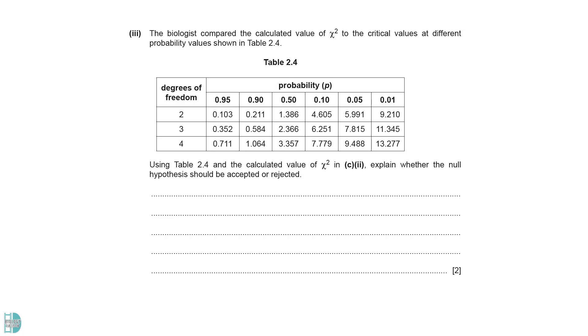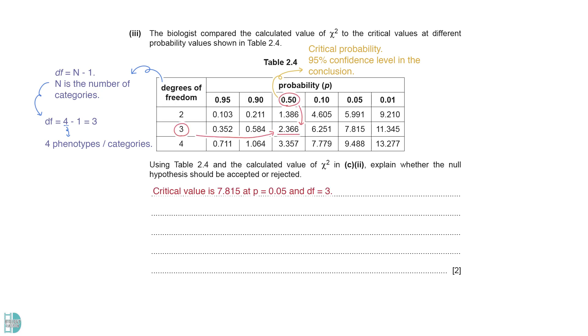Part 3 wants you to make a conclusion based on the value. First, we have to obtain the critical chi-square value from the table. The critical probability we always use is 0.05. This means that we want to have a 95% confidence level in the conclusion we make. The degree of freedom in a chi-square test is n-1. n is the number of categories. In our case, there are 4 phenotypes minus 1. The table shows us that our critical value is 7.815. Now, compare the calculated and critical values. If the calculated value is smaller than the critical value, p is greater than 0.05. The null hypothesis is accepted.